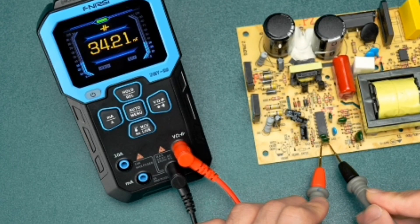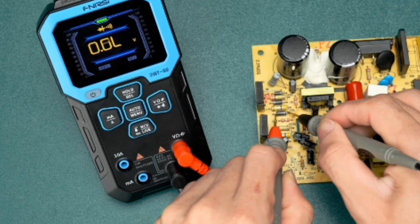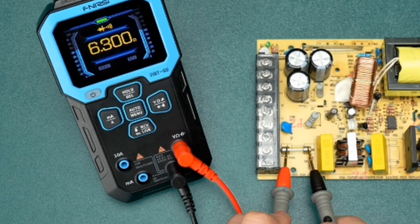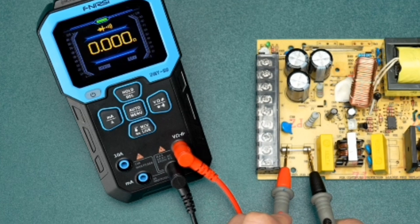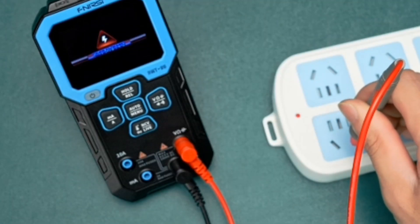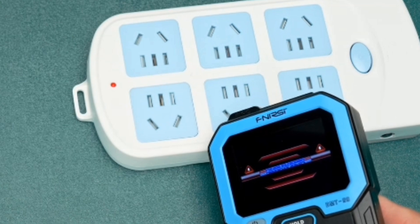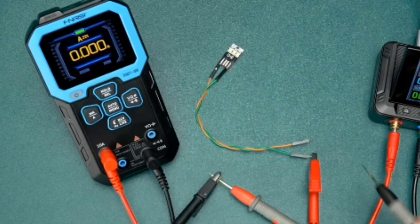Opt for reputable brands like Fluke, Klein Tools, or Extech, which often provide reliable products and good customer support. Consider accuracy, functionality, safety, display quality, and brand reputation when selecting the best digital multimeter to ensure it meets your specific needs.